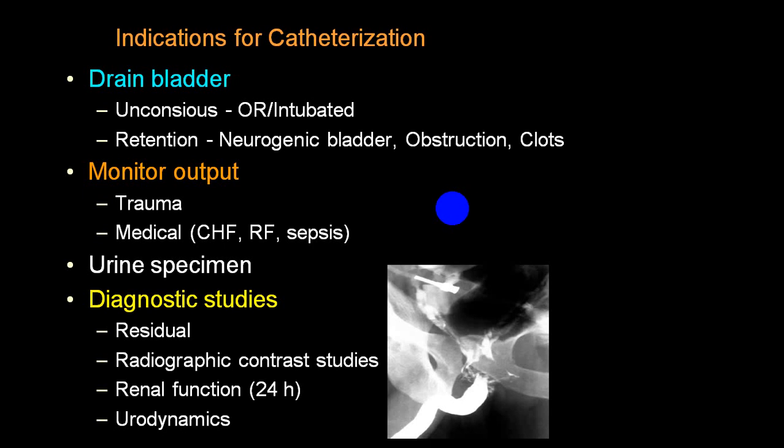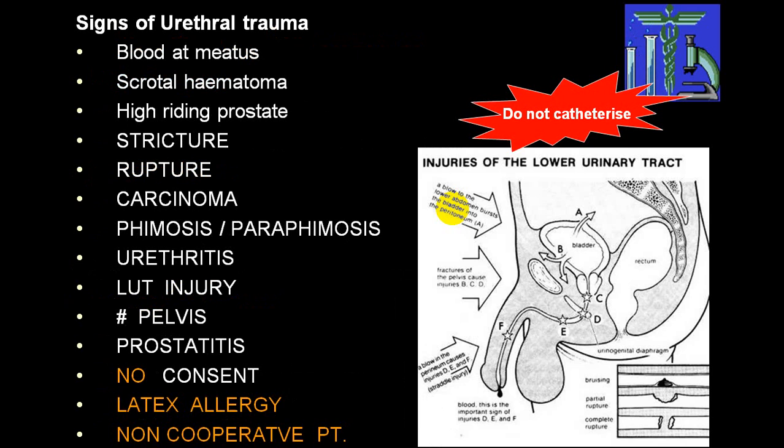Catheterization is used to monitor output in traumatic injury and medical conditions like congestive heart failure, renal failure, and sepsis. It is done to obtain a clean-catch urine specimen for culture and antibiotic sensitivity. It is also used in diagnostic procedures including cystometry, urodynamic studies, cystography, micturating cystourethrogram, and ascending pyelography.